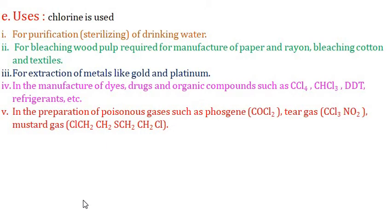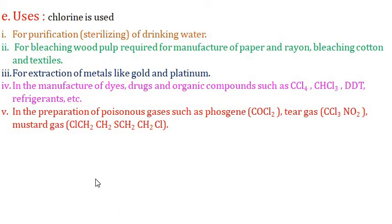Uses of chlorine: it is used for the purification of drinking water, extraction of metals like gold and platinum, manufacture of dyes, drugs, and organic compounds such as CCl4, CHCl3, DDT, and refrigerants. It is also used in the preparation of poisonous gases such as hydrogen cyanide, tear gas, and mustard gas.